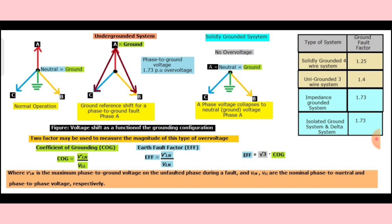That means if the maximum voltage that occurs in your system is VLN during the fault on the unfaulted phase, and you divide it by the rated voltage of your system, that gives you the coefficient of grounding.